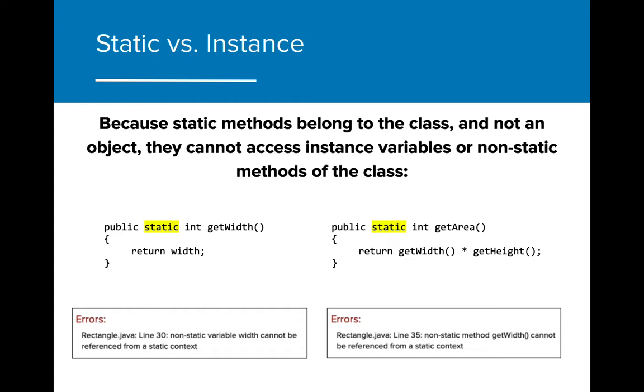Because static methods belong to the class, it's important to note that they cannot access instance variables or non-static methods. When we attempt to include the instance variable width from the rectangle class, or the method getWidth, the program throws an error indicating that these cannot be referenced from a static context. This is because static methods are not associated with an object, but with the class itself.